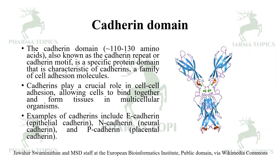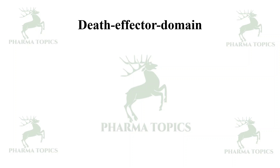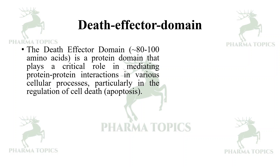Examples of cadherins are E-cadherin, which is of epithelial origin; N-cadherin, which is of the nervous system — that is neural cadherin; and P-cadherin, which is of placental origin.